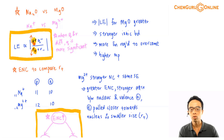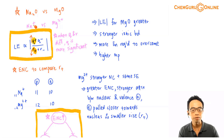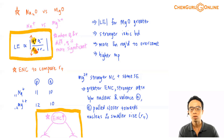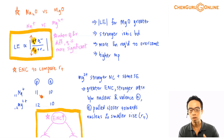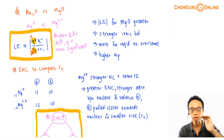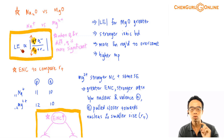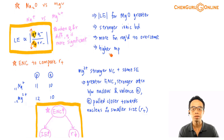Lattice energy is proportional to Q⁺ × Q⁻ over R⁺ + R⁻. Comparing Na⁺ versus Mg²⁺, the charge of Mg²⁺ is greater, and the size of Mg²⁺ is smaller. This means a bigger numerator and a smaller denominator, so the magnitude of the lattice energy for MgO is greater. The ionic bonds are stronger, more energy is needed to overcome them, and the melting point is higher.